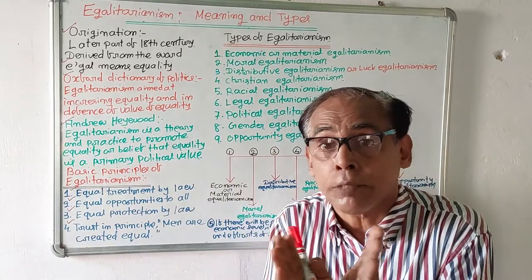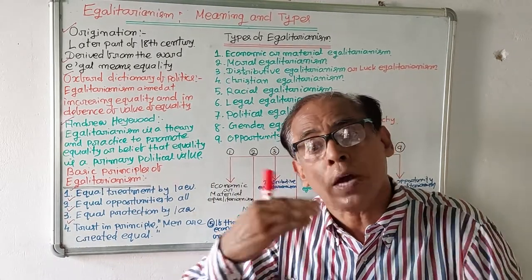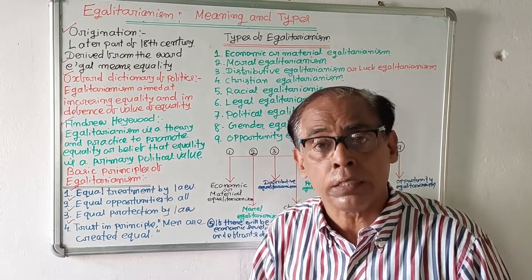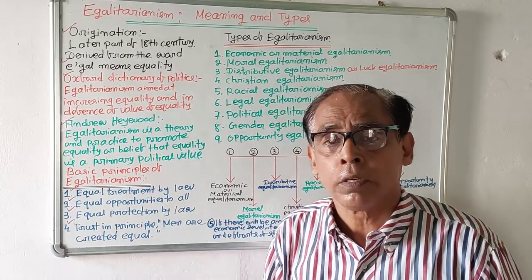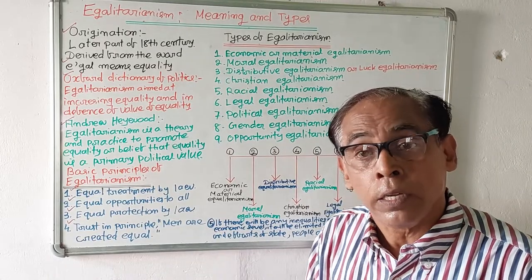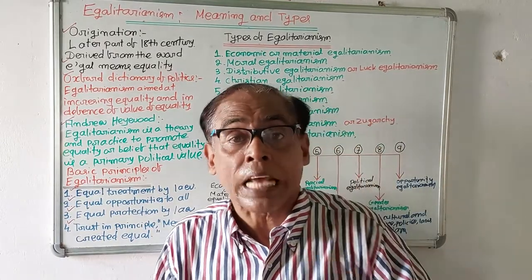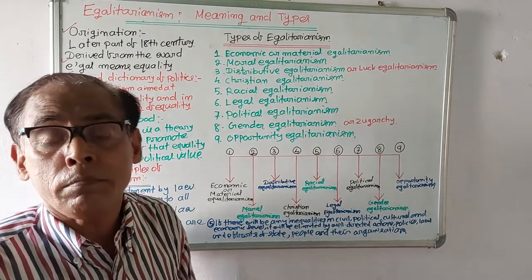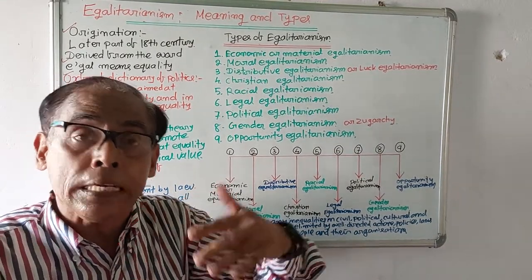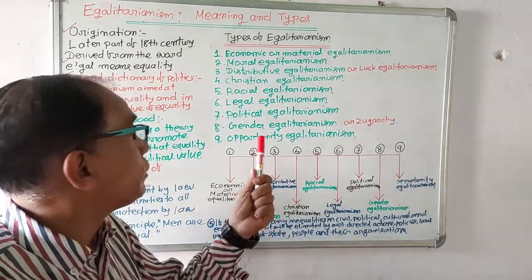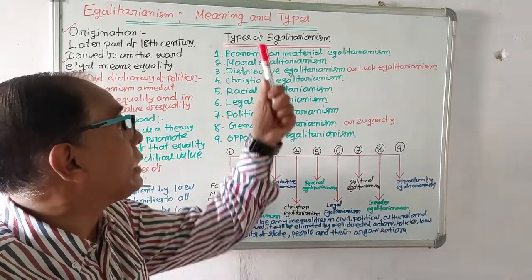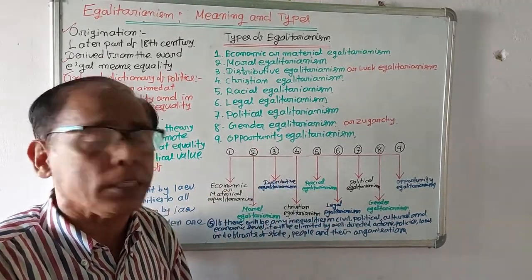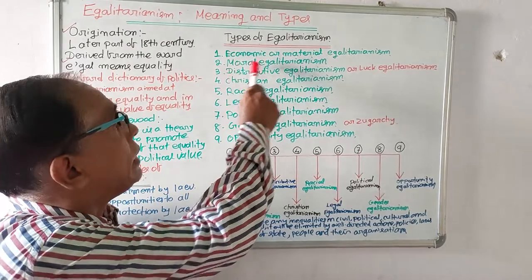So we are now clear about what egalitarianism is, when it originated, who was its father, from which word it has come, and what are its main principles. Now we will discuss the types of egalitarianism. Egalitarianism has many categories. In this video we will discuss nine categories of egalitarianism. The first category is economic egalitarianism.